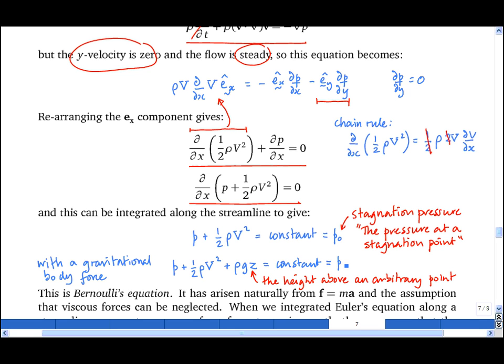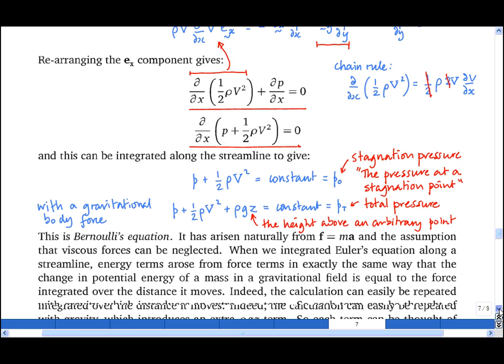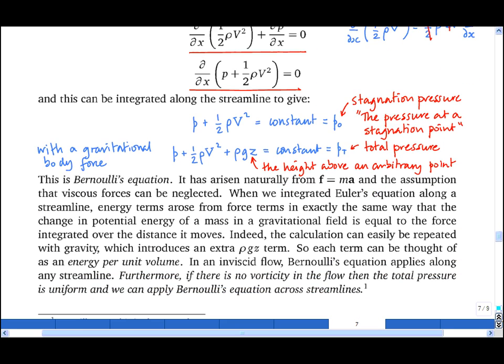And this is given the symbol pt, which is known as the total pressure. And there are obvious physical meanings to each of these terms. Rho gz is the gravitational potential energy per unit volume. A half rho v-squared is the kinetic energy per unit volume. And p, which is also an energy per unit volume, is the pressure potential energy, which is the potential for the fluid to do work on its environment.